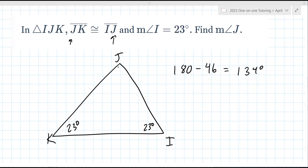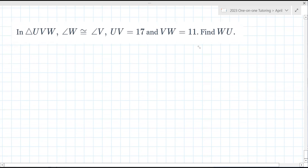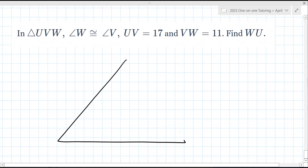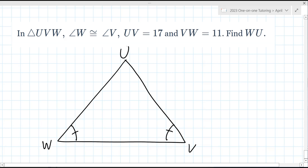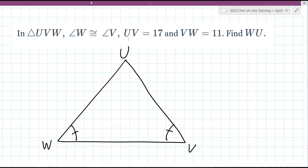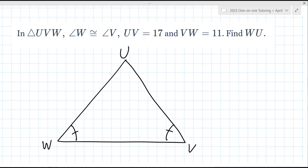Are you finding the ones with sides or angles to be easier? Sides — totally agree. W and V are congruent here. Go ahead and find the missing side. UV is 17 and VW is 11 — that looks good.